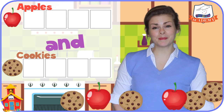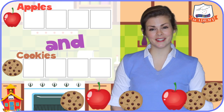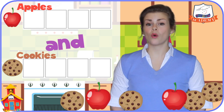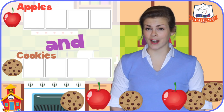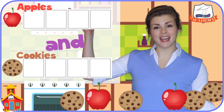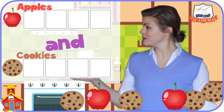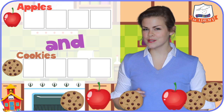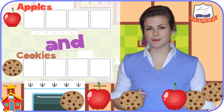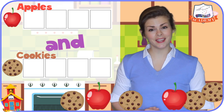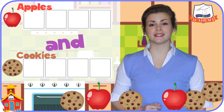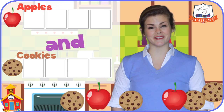This is a picture graph. You can see there are two rows — one is for apples and the other is for cookies. Do you see all those empty boxes beside the apple and the cookie? That's where we will mark down how many of each we have.